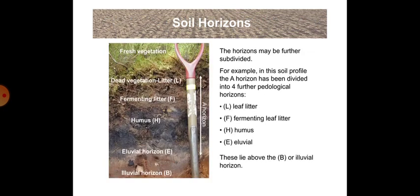Now we will talk about soil horizons. The horizons may be further subdivided. For example, in this soil profile, the A horizon has been divided into four further pedological horizons: leaf litter, fermenting leaf litter, humus, and eluvial. These lie above the B or illuvial horizon as shown in the figure.